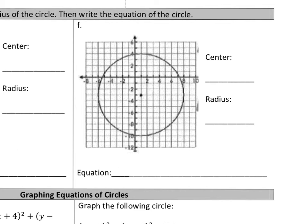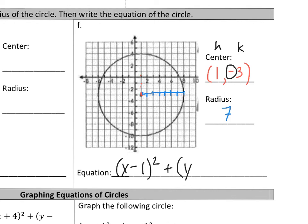For this next example, first I locate my center: it's at 1, negative 3, which is my h and k. Then the radius goes from the center to any point on the circle — going directly to the right, I count 1, 2, 3, 4, 5, 6, 7, so my radius is 7. Plugging into the equation: x minus 1 squared, then since k is negative 3, it becomes y minus negative 3, which turns into plus 3 squared, and it equals r squared, which is 7 squared, or 49.